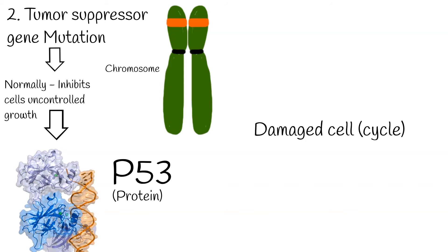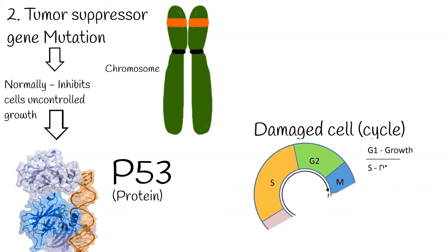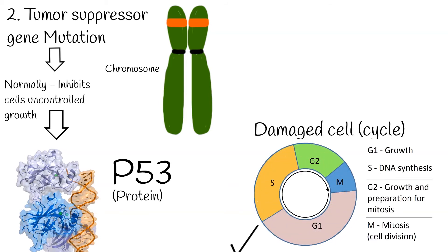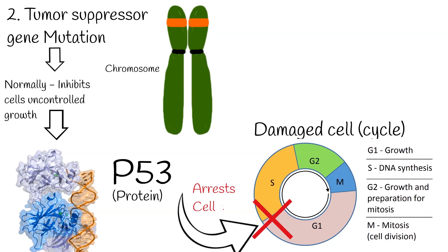P53 is a classical example of a tumor suppressor gene. Normally, if the cell is damaged, the P53 gene stops the cell from uncontrolled proliferation — it arrests the cell cycle. Tumor suppressor genes are located on both chromosomes, and two mutations are needed to stop them from functioning.